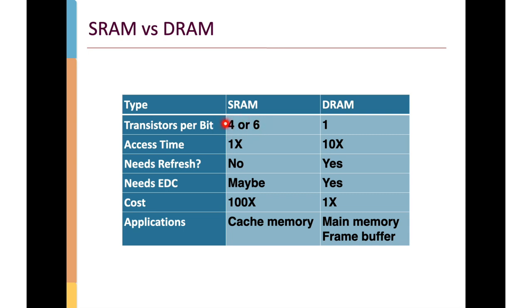Because there are more transistors required for a bit of SRAM, it's going to be larger and take up more space on the chip. It's also more expensive because we're including more physical hardware. But it's also faster, which is an important distinction that makes the memory hierarchy work. In rough terms, the access time differs between SRAM and DRAM by a factor of about 10 — if it takes one time unit to read a bit of SRAM, it takes 10 times as long to read from DRAM.